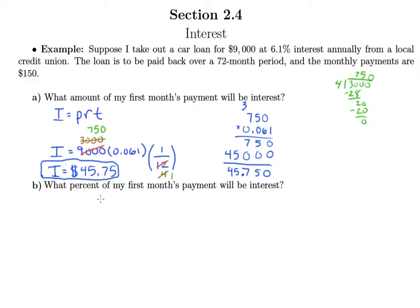But part B asks us to then take this number and find out what percent of my first month's payment will be interest. So as a percentage of your payment, how much of it is interest. So what we really need to know is, $45.75 is what percent of $150? So that's just going to be $45.75 equals what percent, X, times 150. And I can divide both sides by 150.